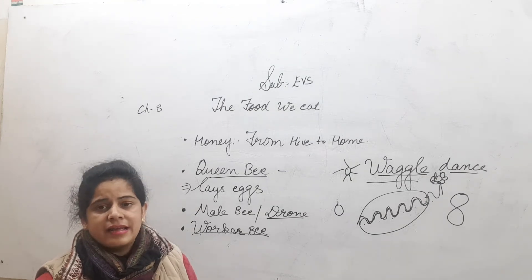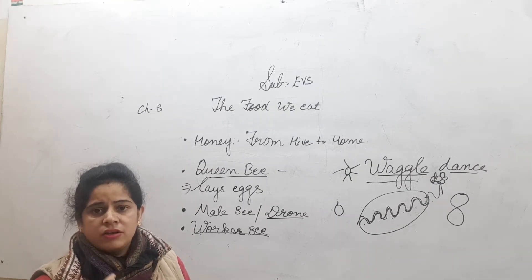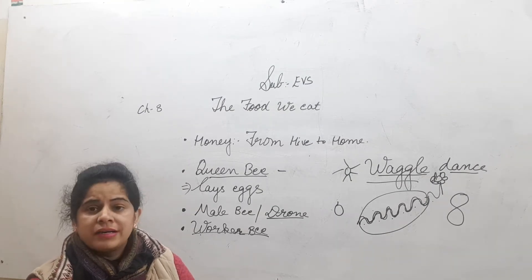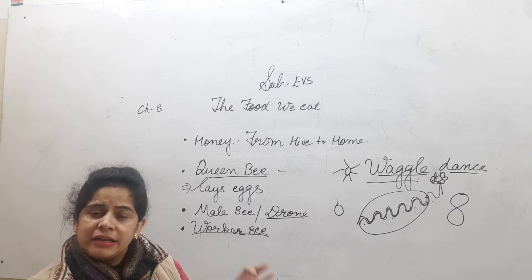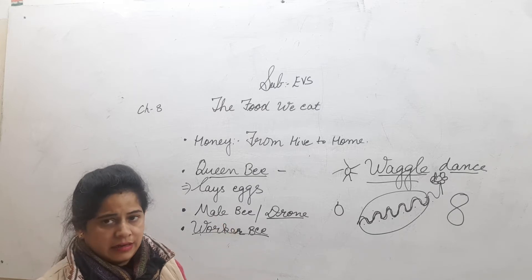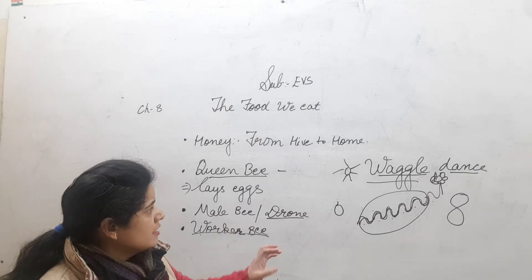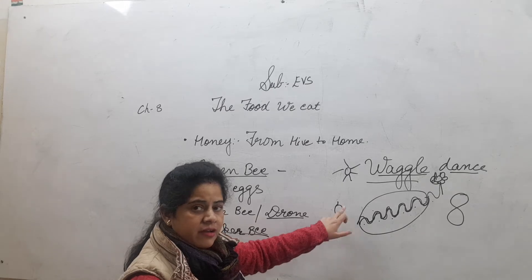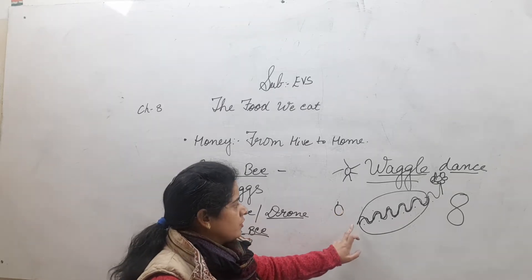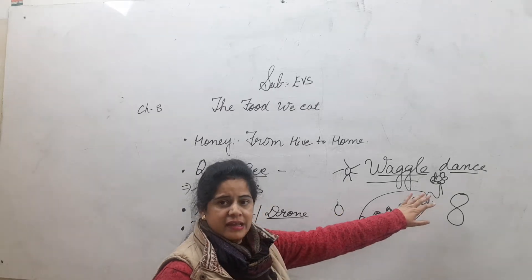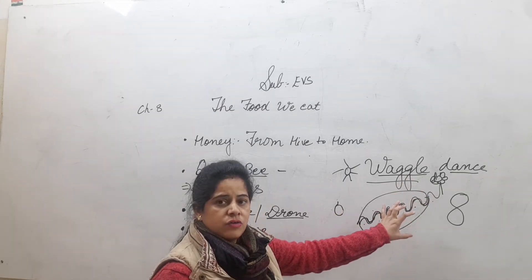So this way, one bee informs the other bees that there is nectar available. She communicates the source location and direction from the hive so the other bees know where to go and collect the nectar.